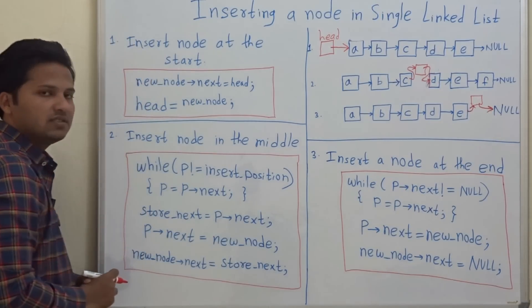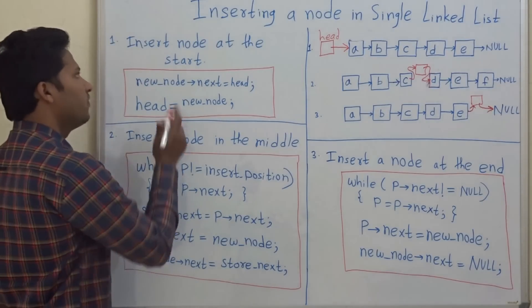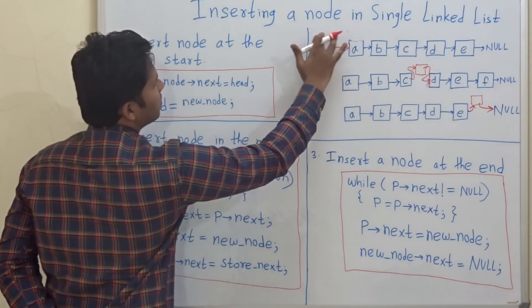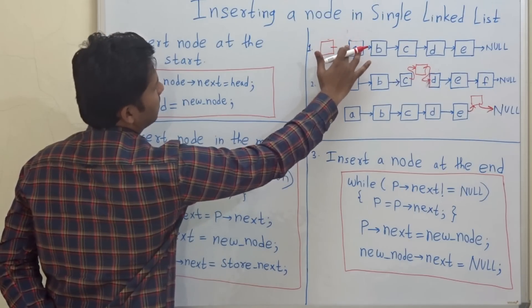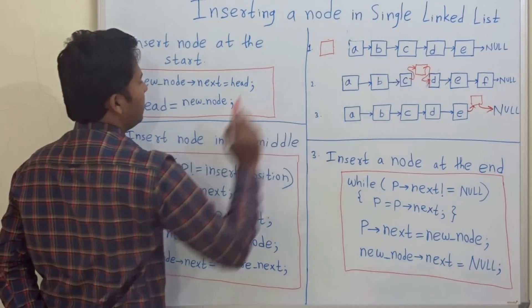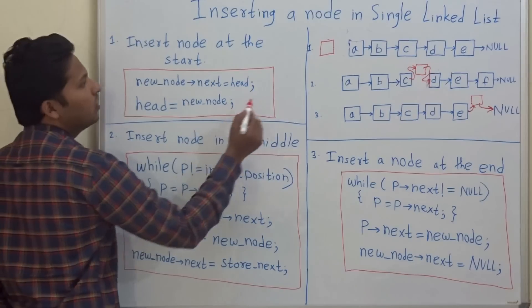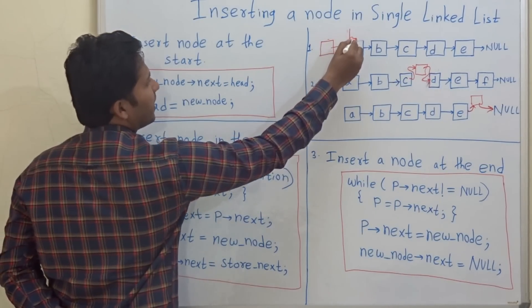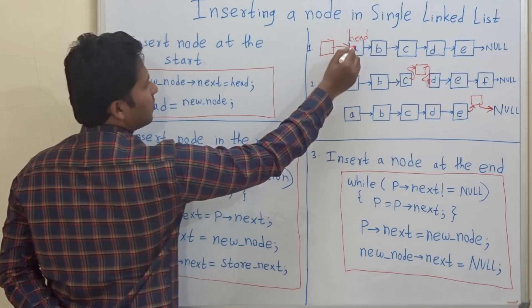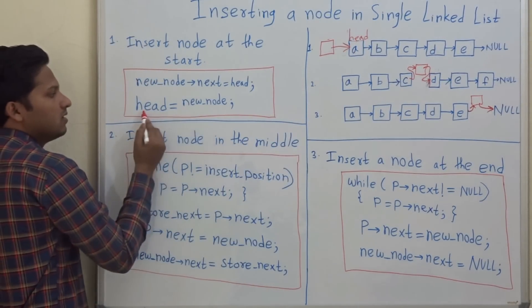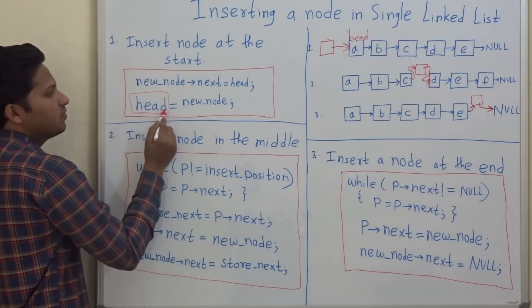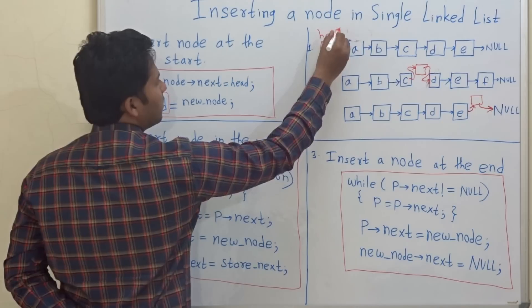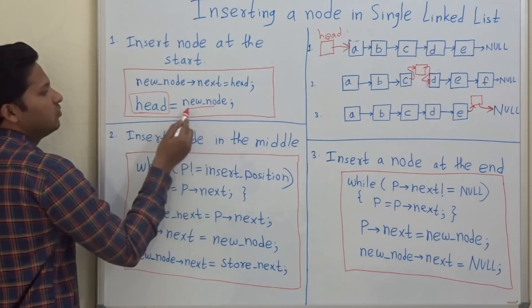Now let us see the pseudo-code for all three cases. First is inserting a node at the start. This is the new node and this is the linked list. We set new_node->next equal to head. This means the next pointer of the new node points to the head of the original linked list. Then the head pointer is updated to point to the new node, which means the new node becomes the head of the linked list.